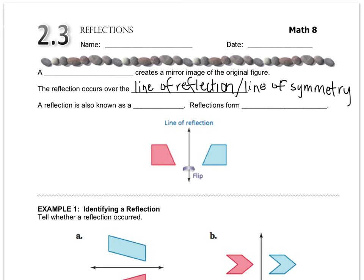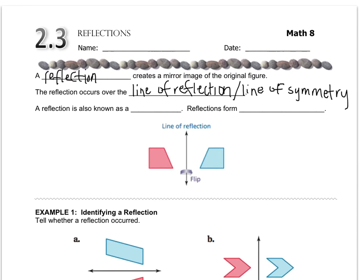A reflection is also known as a flip, which is why when you look in a mirror, like the classic, if you raise your left hand, it looks like the mirror image or the reflection is raising its right hand, and reflections form also congruent figures.